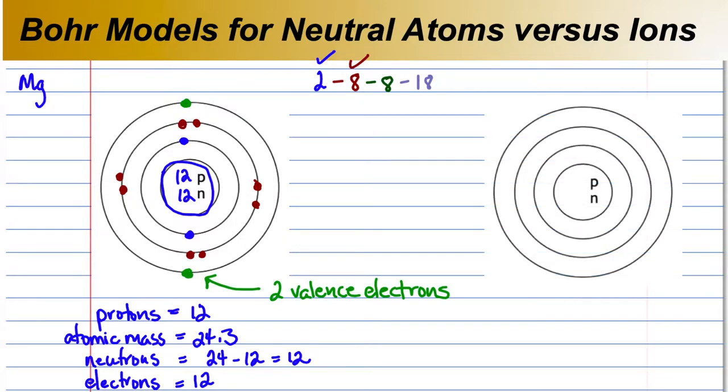Magnesium doesn't like to stay neutral. In fact, these two valence electrons make magnesium quite unstable. Magnesium will give up the two electrons and become an ion. A positive ion.